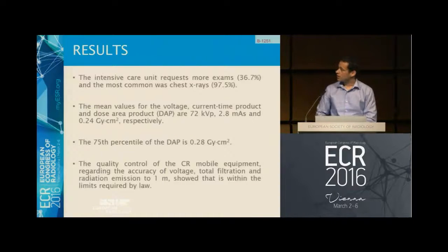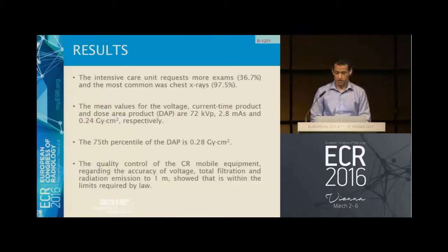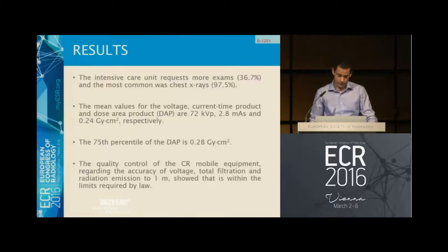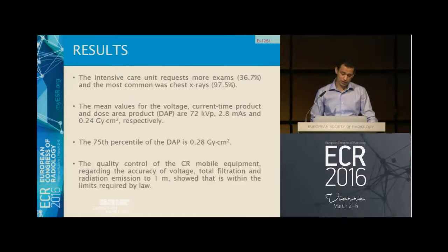Regarding our results, the intensive care unit requests the majority of exams, which are almost all chest X-rays, and the mean values for the voltage, current-time product, and dose area can be seen here. We calculated the 75th percentile of the depth dose to 0.28 grays per square centimeter. We also performed quality control of the mobile equipment regarding the accuracy of voltage, total filtration, and radiation emission at one meter, and it showed that it is within the limits required by law.